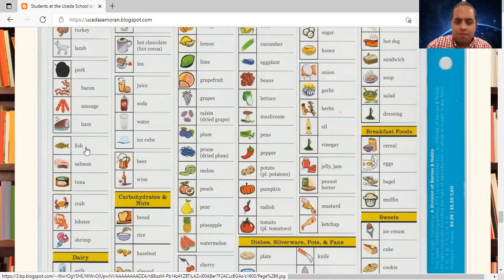Please say with me fish, salmon, tuna, crab, lobster, shrimp. These foods are under seafood. These foods are considered seafoods.